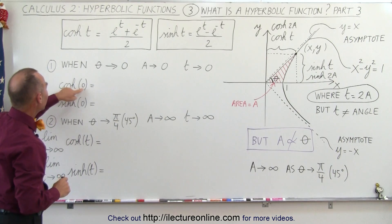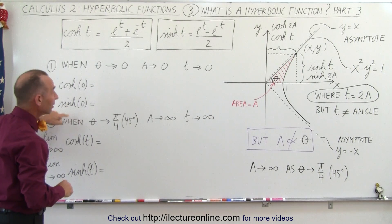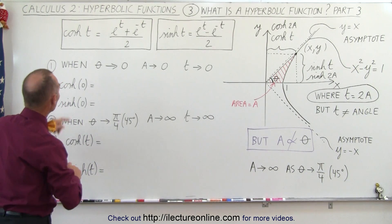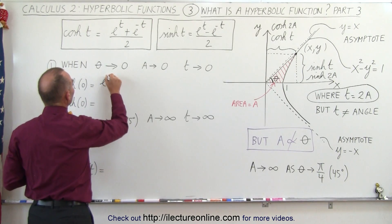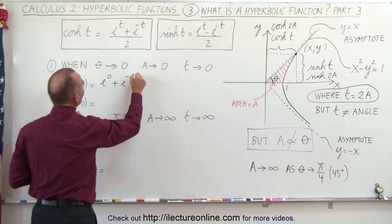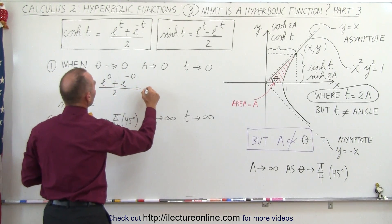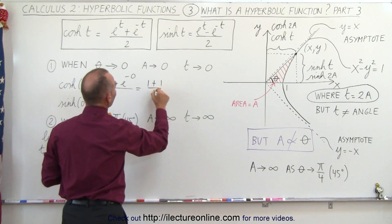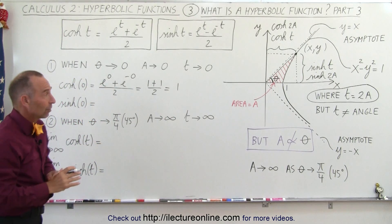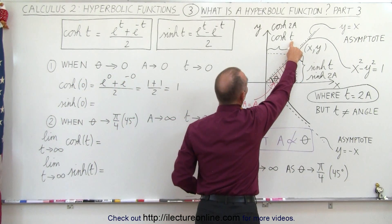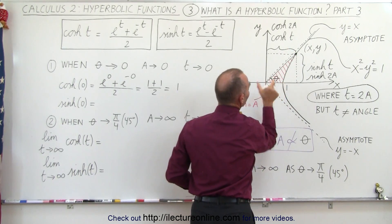We're going to plug in 0 for t into the hyperbolic cosine to see if we get those values. When we plug that into our equation, this is equal to e to the 0 plus e to the minus 0 — which is still e to the 0 — divided by 2, which becomes 1 plus 1, divided by 2, which is 2 divided by 2, or equal to 1. That's exactly what we expected: plugging in 0 for the hyperbolic cosine brings us to the value 1.